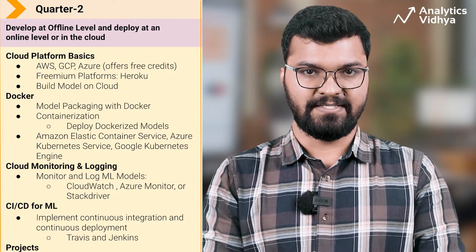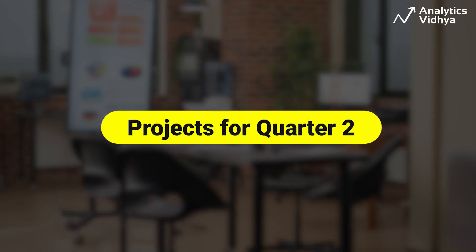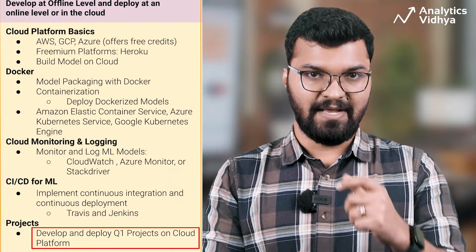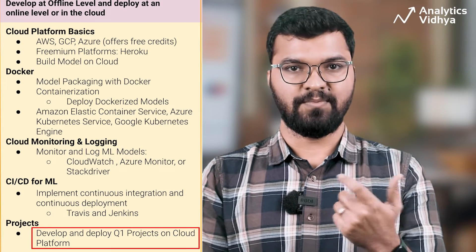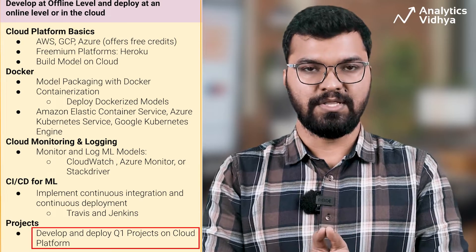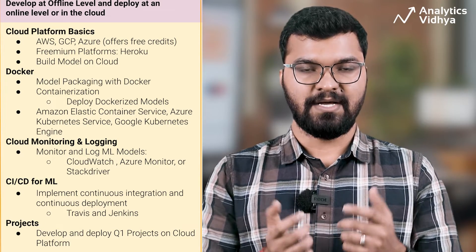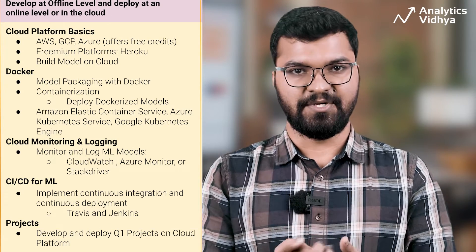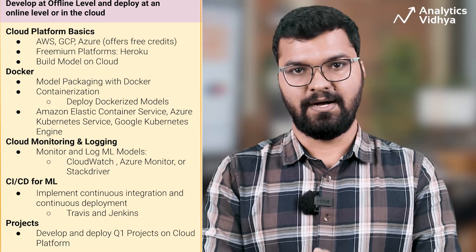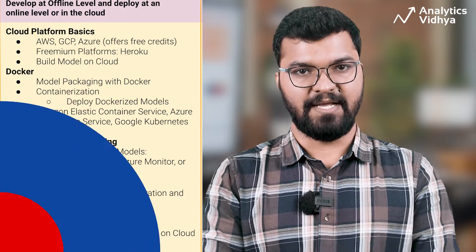Explore tools like Travis CI or Jenkins for CI/CD. In Quarter 2, you should develop and deploy the projects from Quarter 1, but this time on the cloud — train them using a cloud-based machine learning platform and deploy to your chosen cloud platform using CI/CD pipelines.